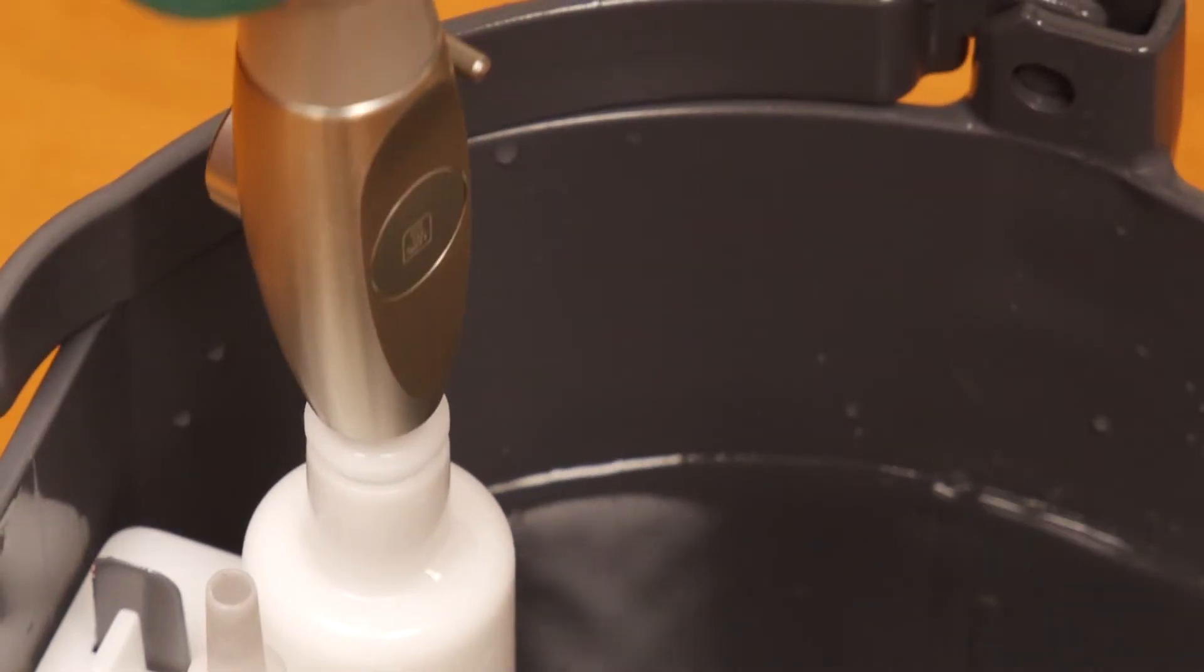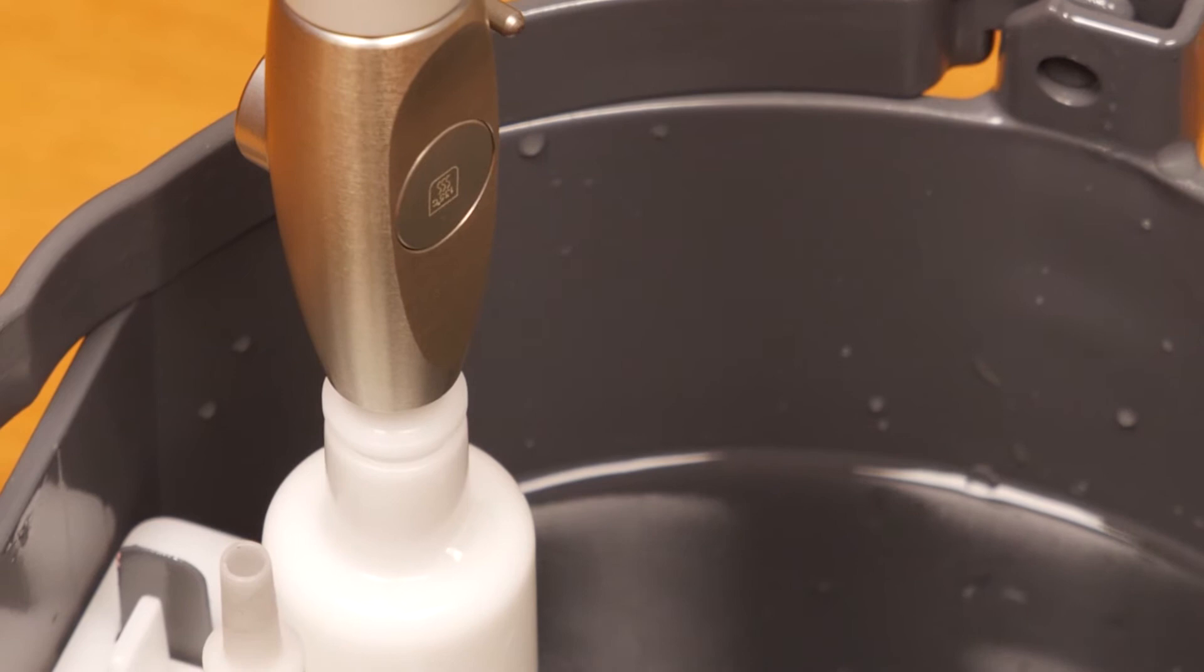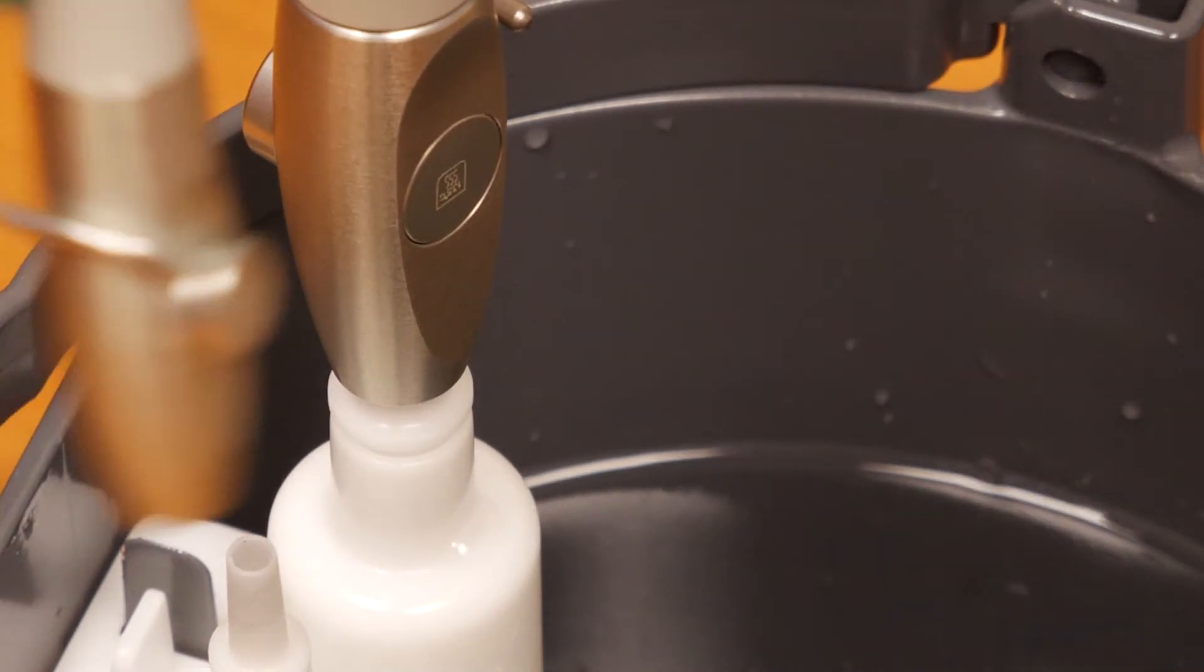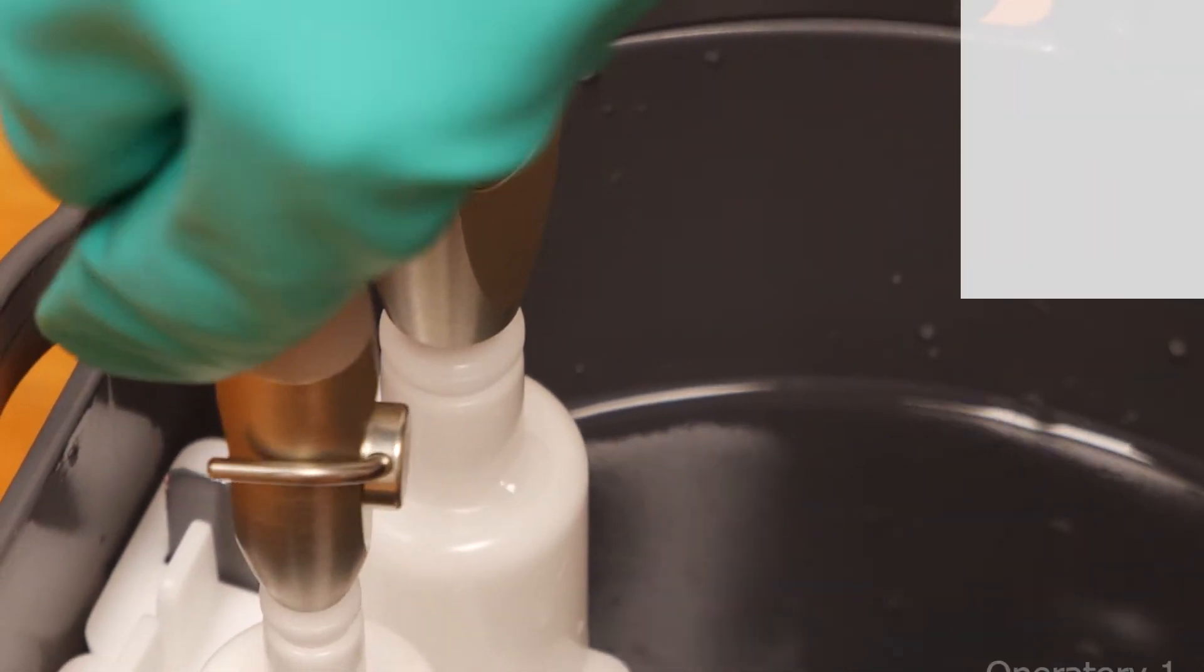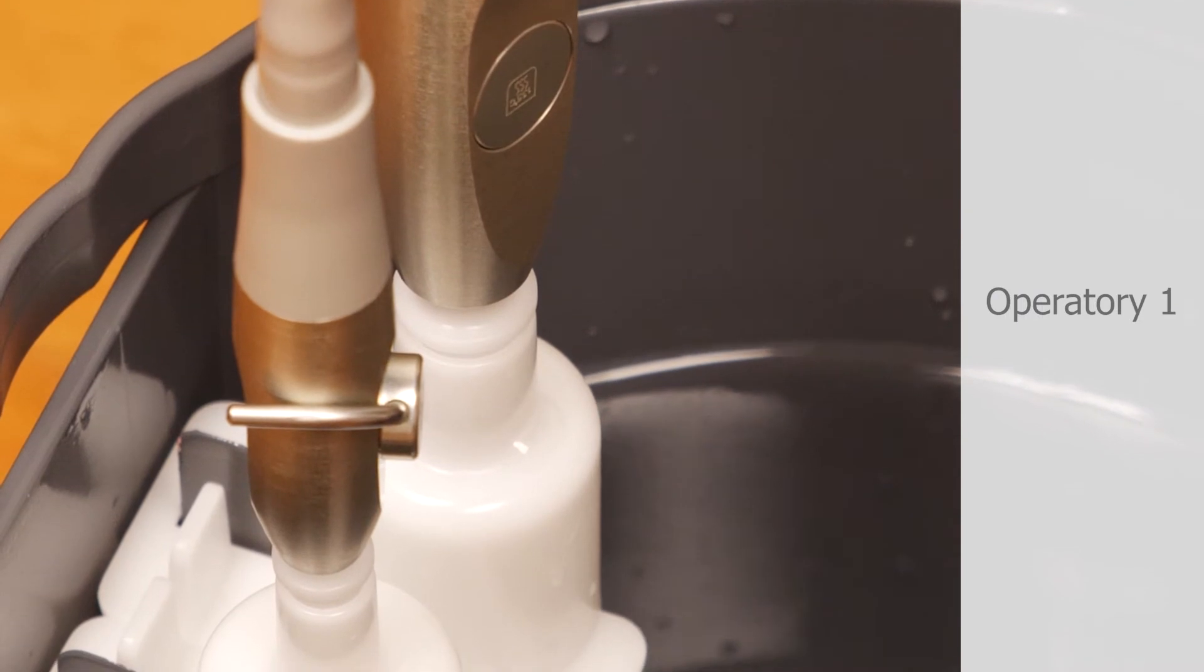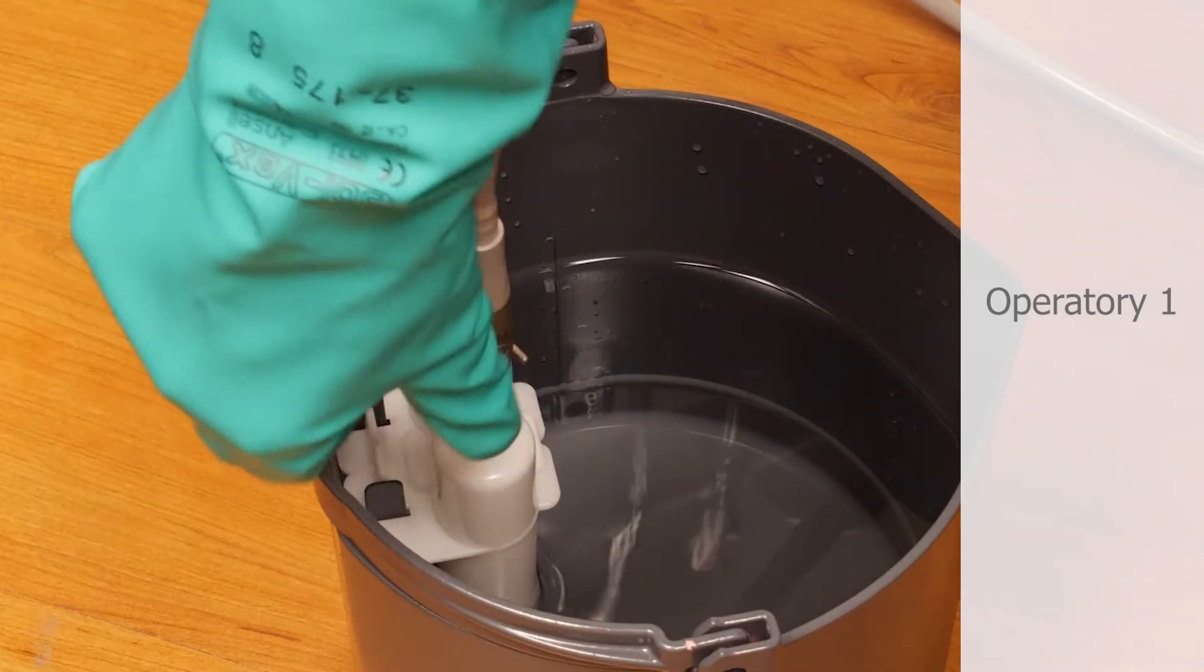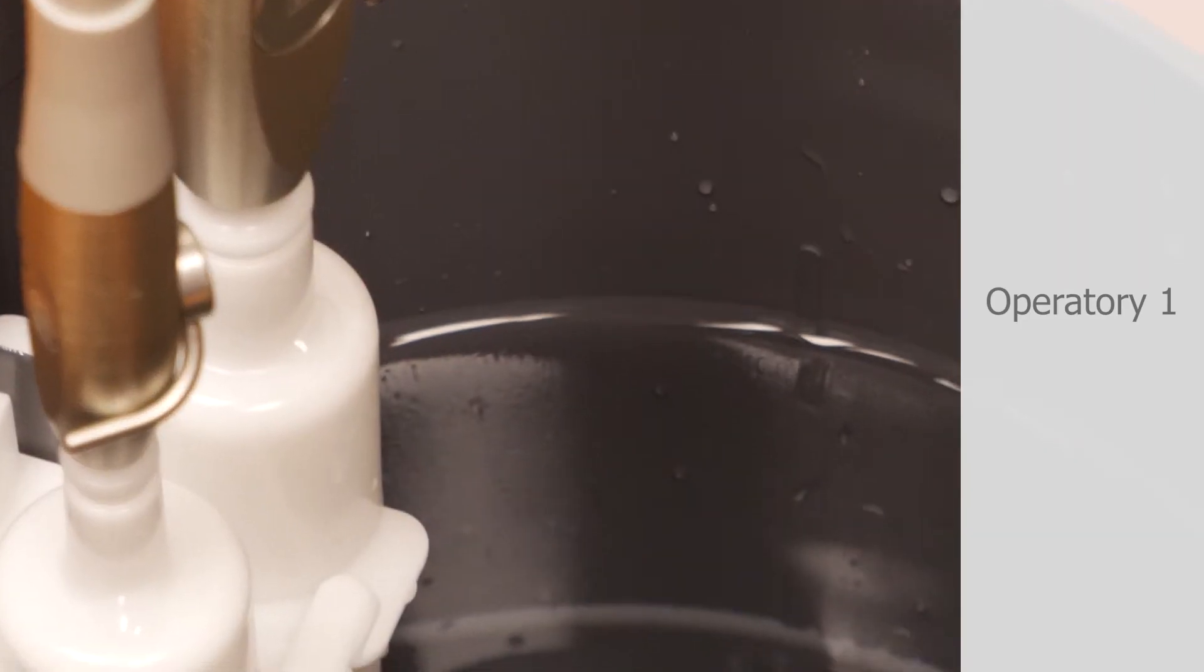Start with the operatory that is the furthest from your central vacuum pump. Attach the high and low suction lines to the dispenser valves and allow it to suction one quart of solution or until it reaches the next measuring line.